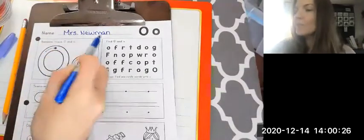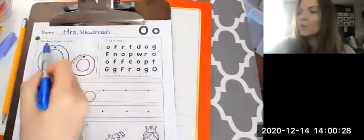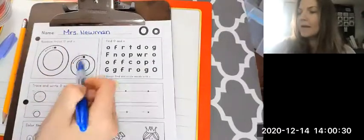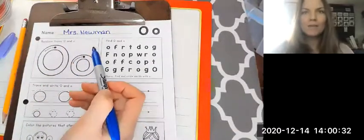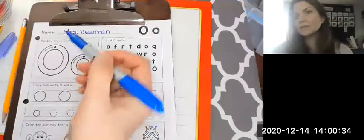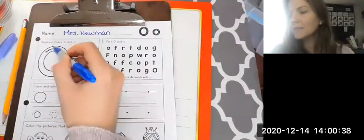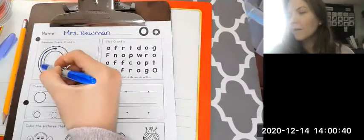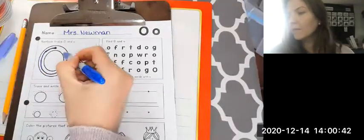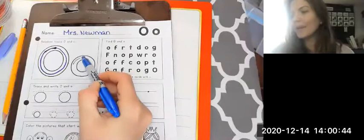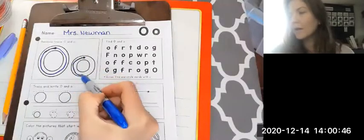Look, I put my name, Mrs. Newman. Here's our O worksheet. We're going to rainbow trace big O and little O. Well, we can't really rainbow trace many different colors because we just have one line. We're going to start at the top circle, go to the left, which is this way. Follow that arrow. Around up. Same thing with little O, around up.